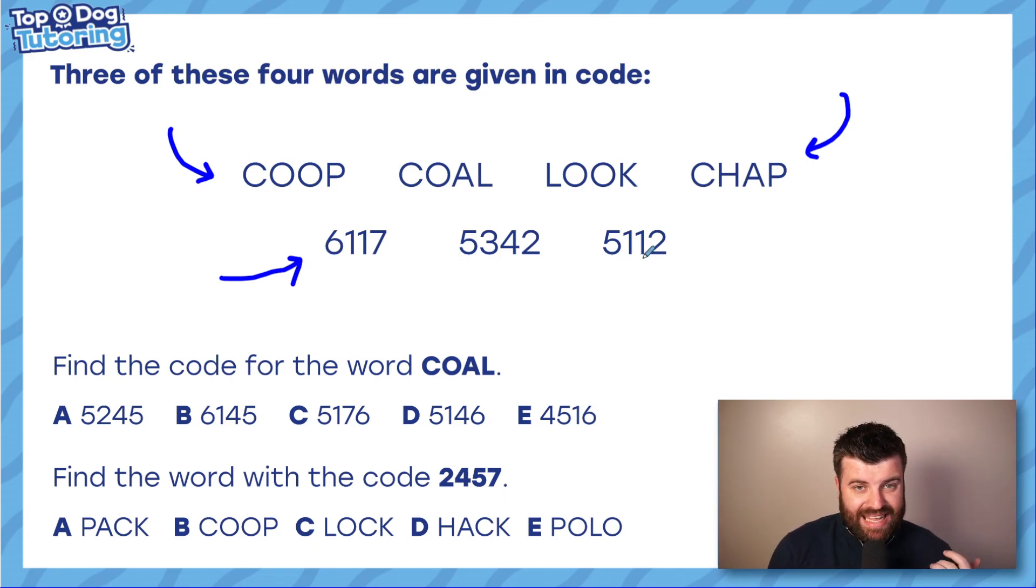We need to either find the code for a word or work backwards to find the word for a code. So we're either going to go from letters to numbers or from numbers to letters. And we can't do any of that until we actually crack this question. So this comes in two steps. The first step is to find out what number represents each letter.